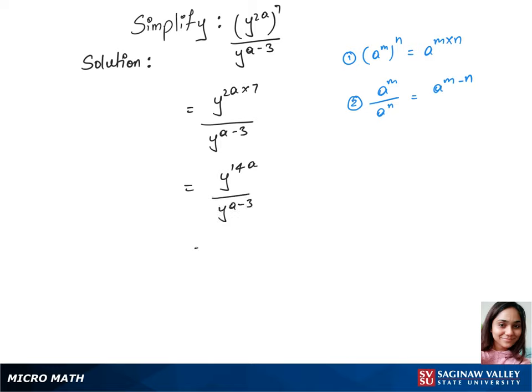Now we have y on top and bottom. We can use rule 2 and put the base y to the power 14a minus of a minus 3.